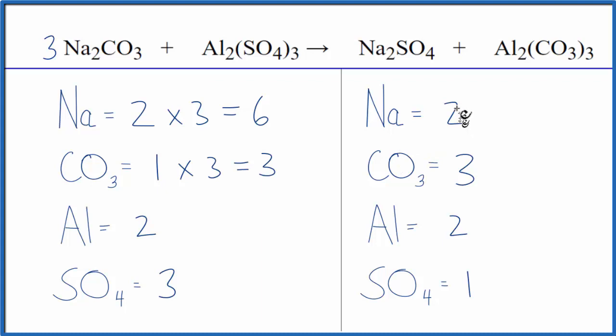Let's see. We could fix the sodium pretty easily. That might even fix the sulfate. If we put a three in front of the sodium sulfate, two times three, that gives us six. One sulfate times three, three sulfates, and we're done.